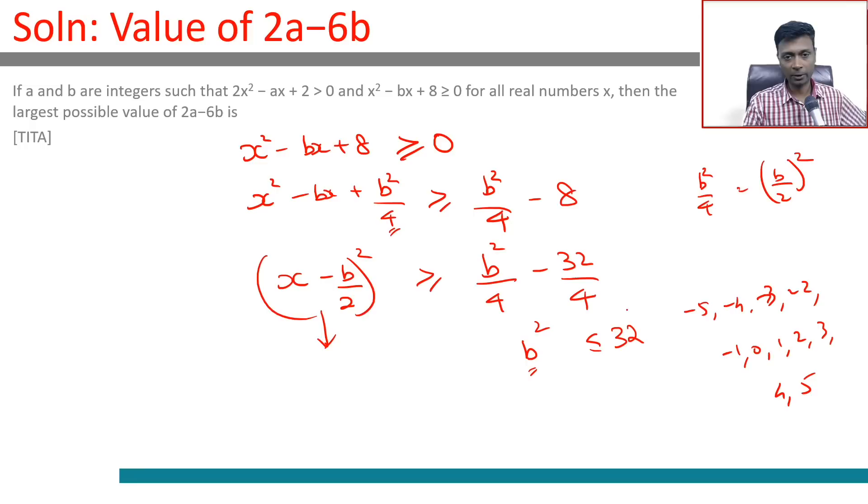All of these will work. We want 2a - 6b to be very high, or we want b to be very small. The smallest integer b can take is -5. So 2(3) - 6(-5) is the largest possible value of 2a - 6b, which is 6 + 30 = 36.